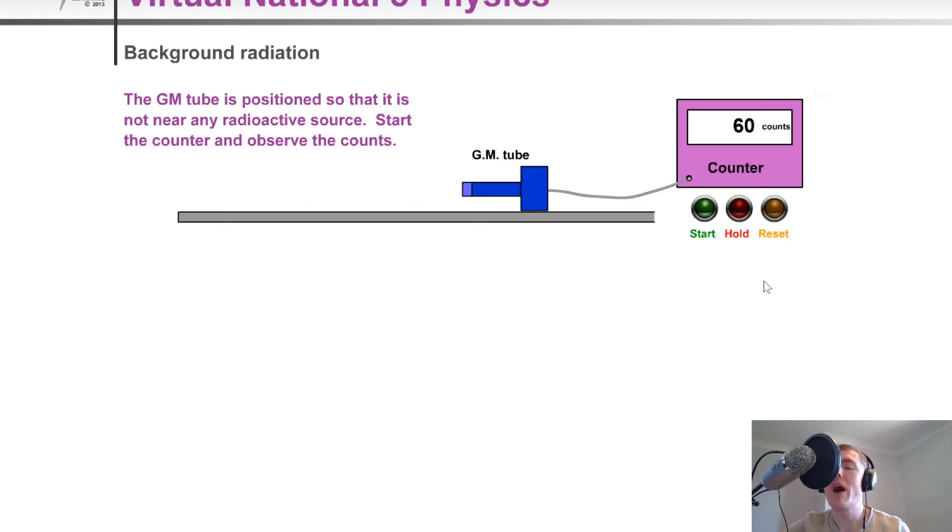So different places on earth will have different levels of background radiation. For example, in Aberdeen, which is also known as Granite City, a lot of its buildings are made from this type of material called granite, which is thought to be more radioactive than other types of stone and so on. So if you go to Aberdeen, you're likely to be exposed to higher levels of background radiation, but it's not going to be enough to affect your everyday life or really your health in any significant way.